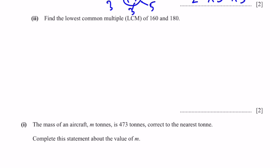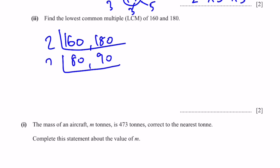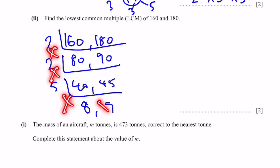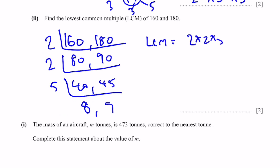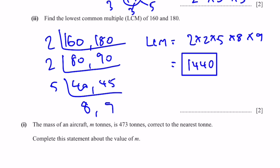Part H, question 2: Find the LCM of 160 and 180. Taking common factors: divide both by 2 to get 80 and 90, then by 2 again to get 40 and 45, then by 5 to get 8 and 9. The LCM = 2 × 2 × 5 × 8 × 9 = 1,440.